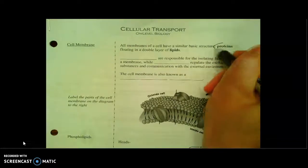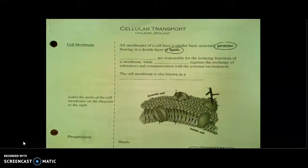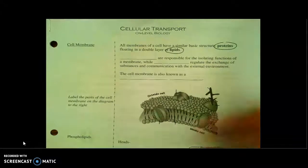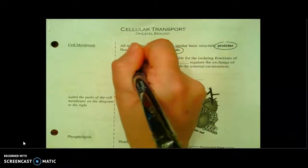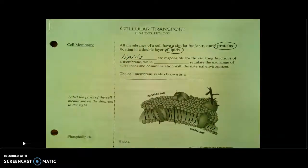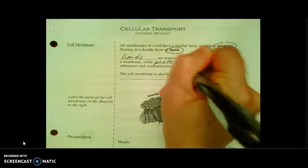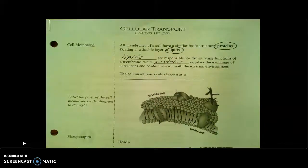They're going to be made of proteins and lipids. So what does each one of these do? Well, first, the lipids are going to be responsible for isolating the cell or keeping it separate, almost like a fence around the outside. On the other hand, the proteins are going to be responsible for substances coming through. And we'll see how all of that's going to work in a minute.